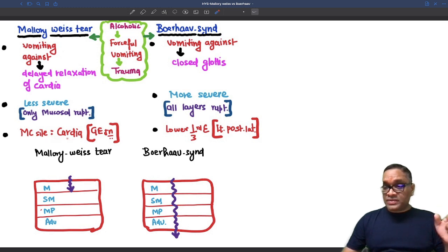Remember most common site for Mallory-Weiss is cardia. Here it is lower one third of the esophagus, and where? In the left posterolateral side. And Boerhaave syndrome, as you can see, all four layers will be ruptured.